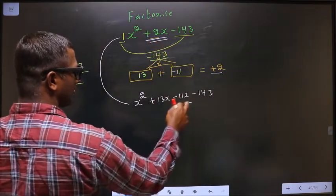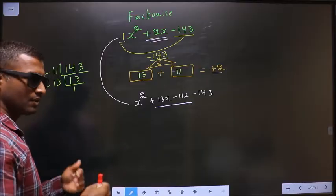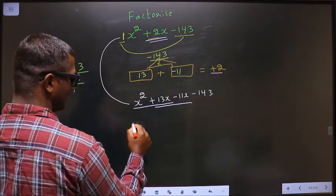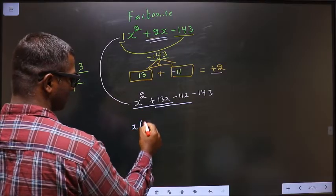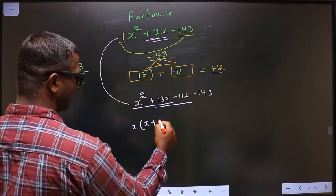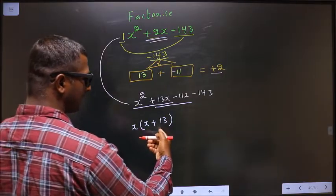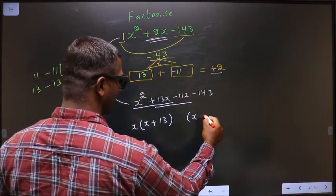In place of 2x, I have written this. Next, now what can be taken out common from these 2 terms is x. So here I get x and here I get 13. Whatever you got in this bracket here, here also you should get the same thing.